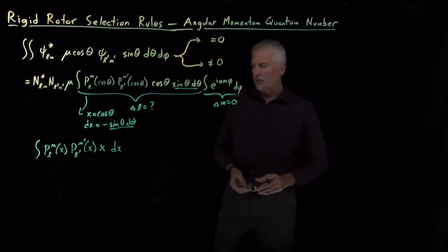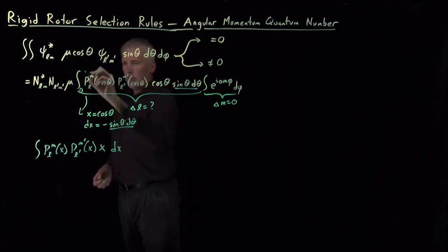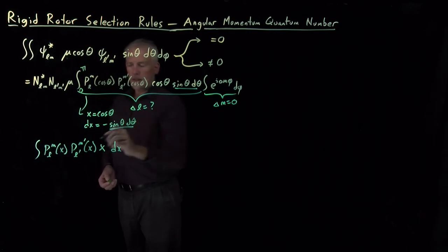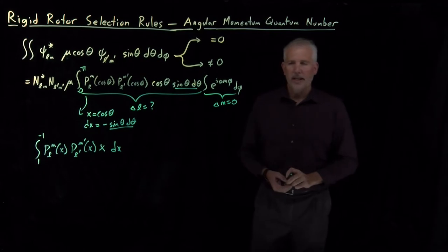This integral is going to go, instead of 0 to pi, cosine theta makes this go from 1 to negative 1. So that's at least a simpler way of writing down the integral.